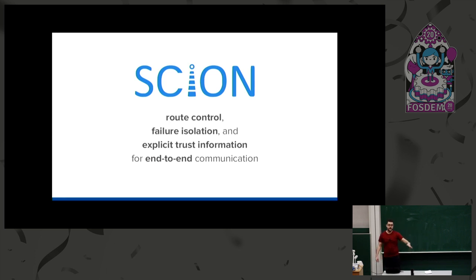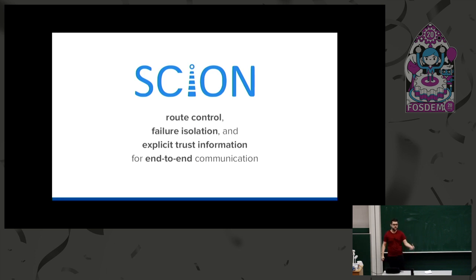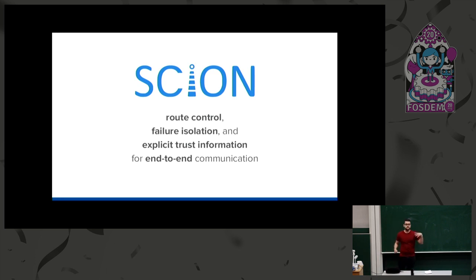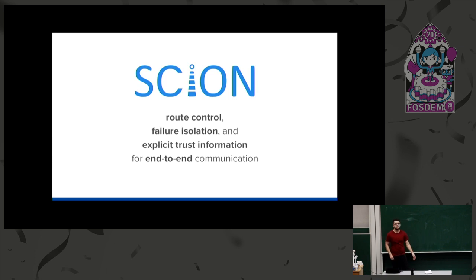Route control. The fundamental problem I have with BGP is that you as the end user have completely no control of how your data flows, where it goes. You can only specify the destination, but you have no idea what happens. Every half a year you can read articles — China steals data, or data flows through Pakistan even though it shouldn't. In Switzerland we had a problem where traffic that was supposed to stay in the country was going through Russia and China. If I'm sending a message to someone on the other side of the street, I want it to go the short path, not through another continent.